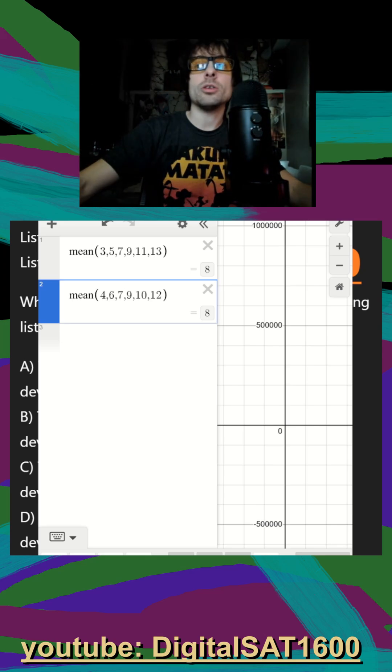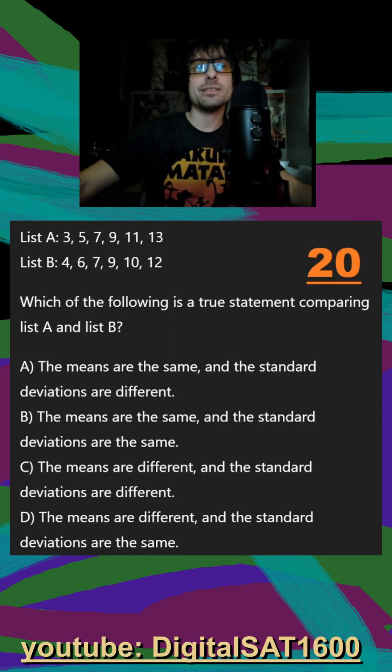So that's nice. Right off the bat we know that our answers are going to have equal means. The means are the same. We can get rid of these two because they say they're different.